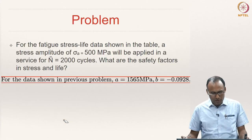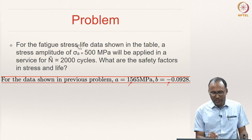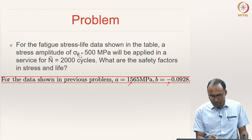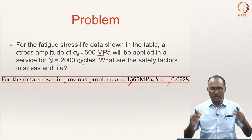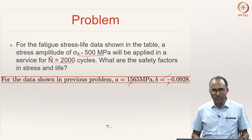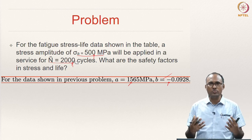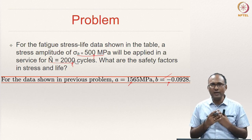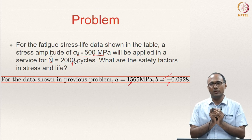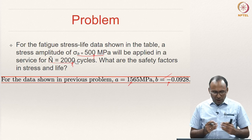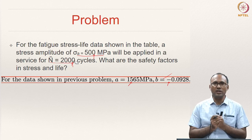Now let us look at a problem using the previous A and B values. For the fatigue stress-life data shown in the previous table, a stress amplitude of 500 MPa is applied with a service life of 2,000 cycles. That means you are designing a component made of this material subjected to a stress amplitude of 500 MPa and the design life is 2,000 cycles — you are telling the customer the component will not fail before 2,000 cycles. We need to find the factors of safety in life and stress for this component.